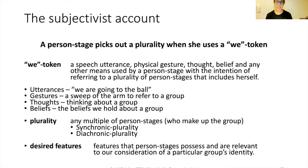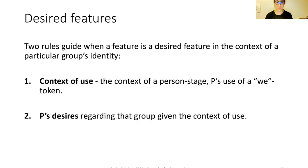A plurality is any multiple of person stages who make up the group. Since a person stage can refer to a group at a time or a group over time, we have synchronic pluralities and diachronic pluralities. A synchronic plurality is a plurality of person stages at a single time. A diachronic plurality is a plurality of person stages at more than one time.